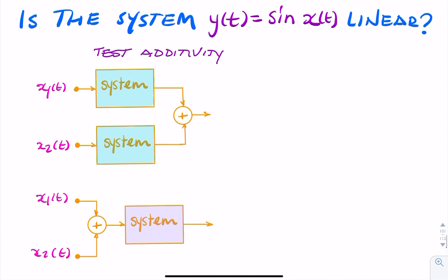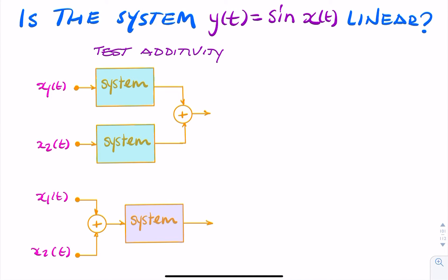We start with the test of additivity. That's straightforward—all we need to do is feed our inputs x1 and x2 into our system. The outputs will be sin(x1(t)) and sin(x2(t)), because that's what my system does: it takes the input and calculates the sine. When I add those two together, that will give me sin(x1) + sin(x2).